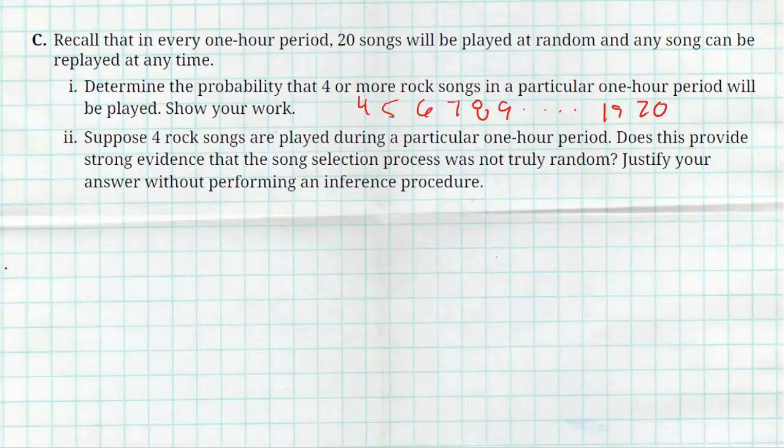I'm going to find the probability that the random variable R, the number of rock songs, is greater than or equal to four, by calculating the probability that it's less than four. That'd be three, two, one, or zero. That's only four calculations. Way easier. And it does say I have to show my work.